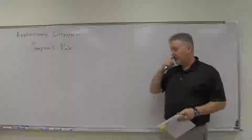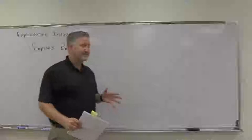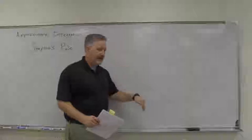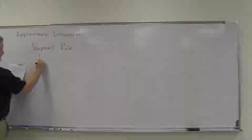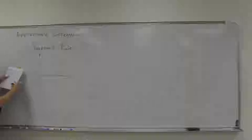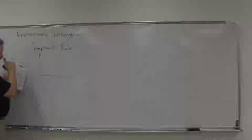Simpson's rule is another way we can approximate integrals. Simpson's rule, believe it or not, uses parabolas instead of straight lines. We're going to use a parabola — we don't have to calculate parabolas, but just be aware it's using parabolas. Let me show you here how it sets up. You don't necessarily have to do all this every time, but here's the way it works.